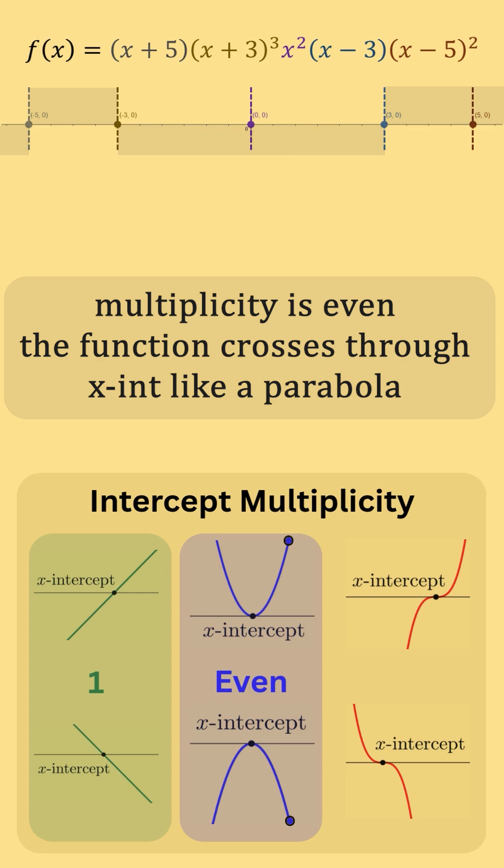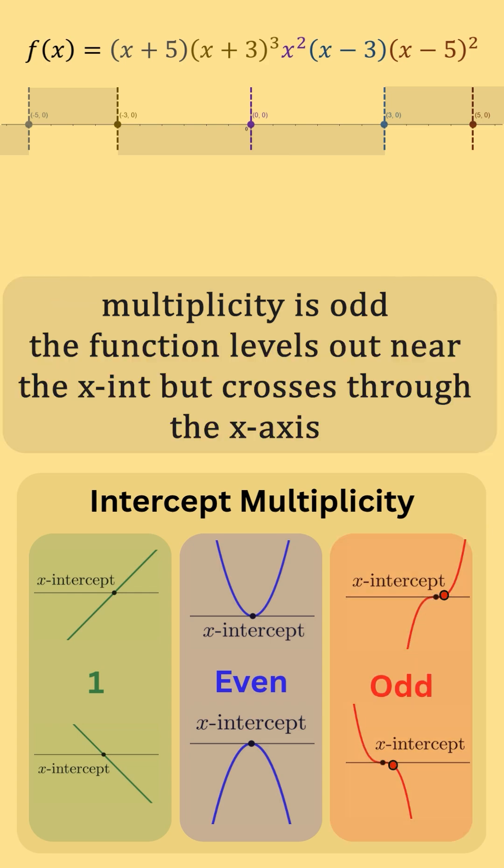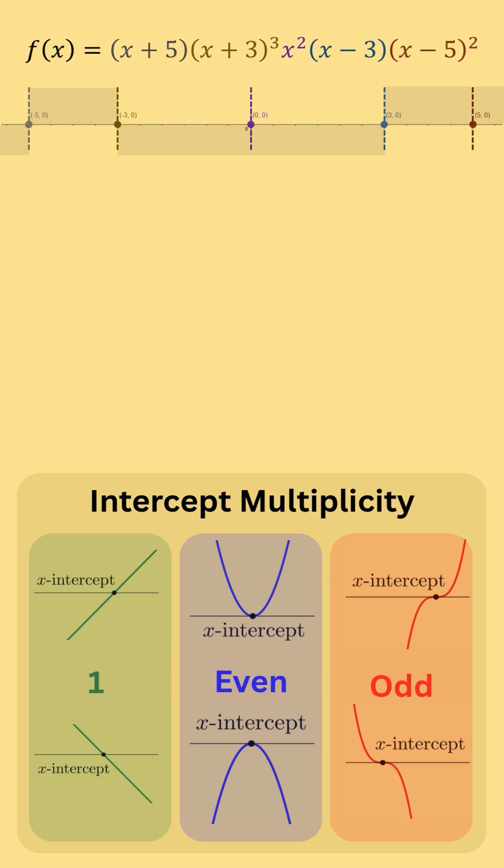If the multiplicity is odd, the function sort of flattens out around the x-intercept, but f(x) does have a different sign on either side of the x-intercept. Looking at the powers of each factor, we can determine the multiplicity of each x-intercept.